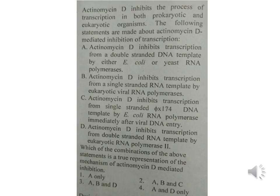The fourth question: actinomycin D inhibits the process of transcription in both prokaryotic and eukaryotic organisms. The following statements are made: (A) actinomycin D inhibits transcription from a double-stranded DNA template by either E. coli or yeast RNA polymerase; (B) actinomycin D inhibits transcription from single-stranded RNA template by eukaryotic viral RNA polymerase; (C) actinomycin D inhibits transcription from single-stranded φX174 DNA template by E. coli RNA polymerase immediately after viral DNA entry; (D) actinomycin D inhibits transcription from double-stranded RNA templates by eukaryotic RNA polymerase 2. Which combination is correct?